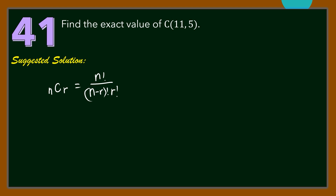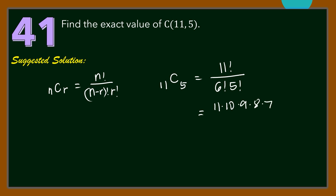In this problem, N is equal to 11 and R is equal to 5. So we have 11 factorial over 11 minus 5 factorial times 5 factorial. We expand 11 factorial as 11 times 10 times 9 times 8 times 7 times 6 factorial, stopping at 6 factorial because it appears in the denominator. Then 5 factorial is 5 times 4 times 3 times 2 times 1.